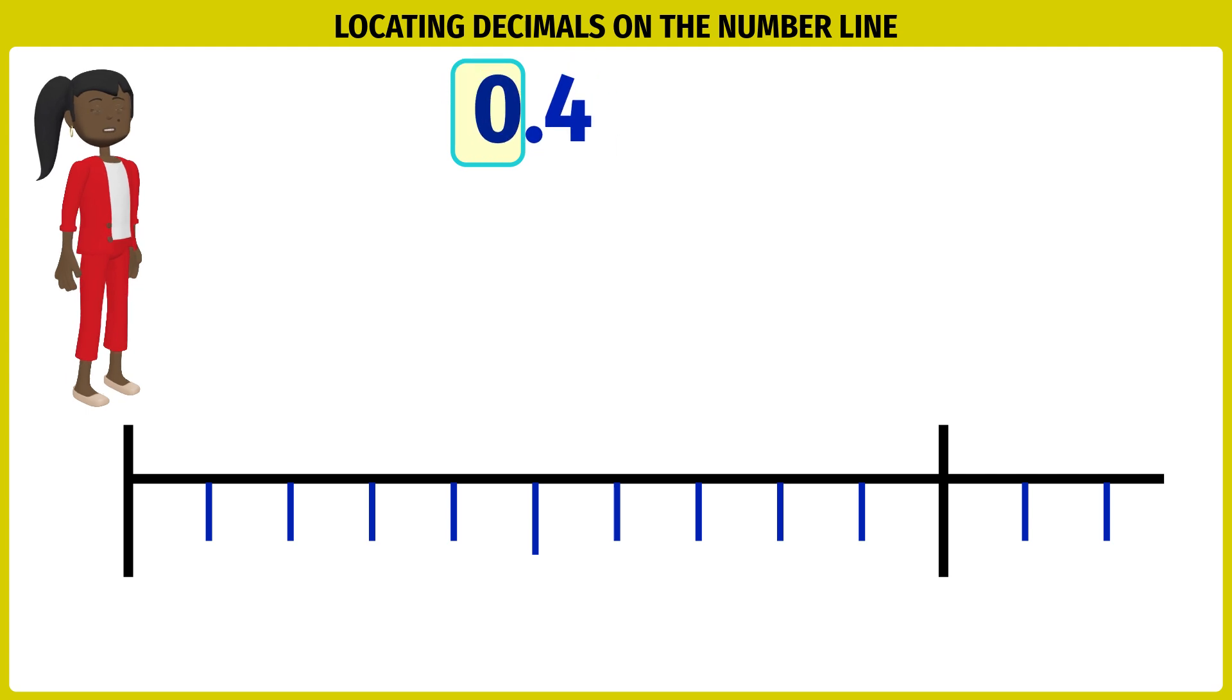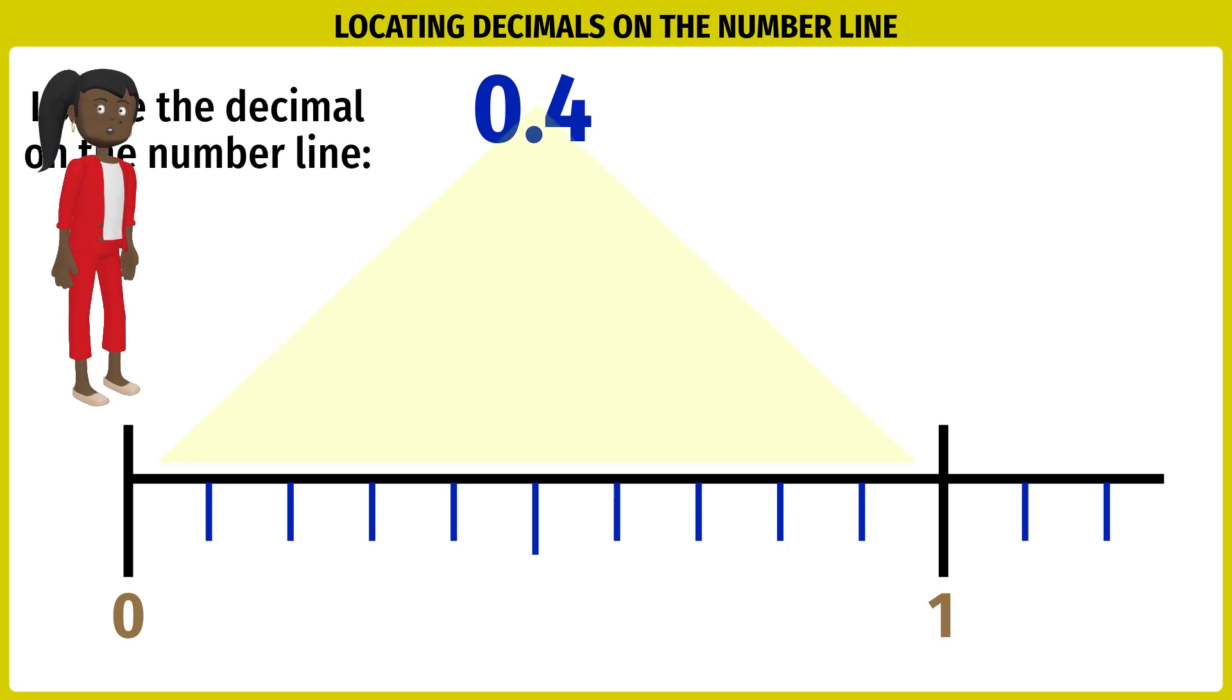0.4 has 0 as the whole number part and 0.4 as the fraction part. It is 0 plus a fraction of a number, so it is greater than 0 but less than 1. It will be located between 0 and 1 on the number line.